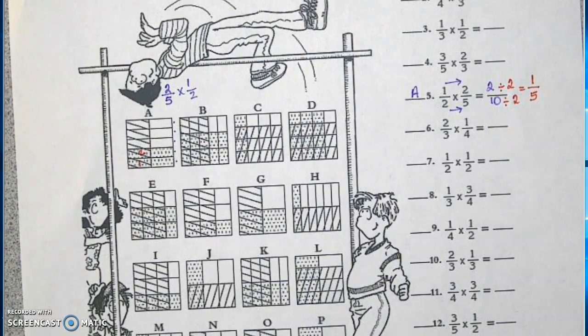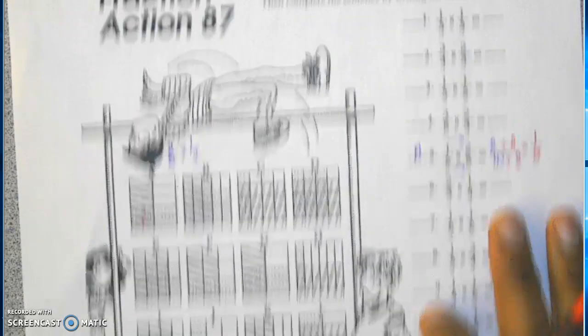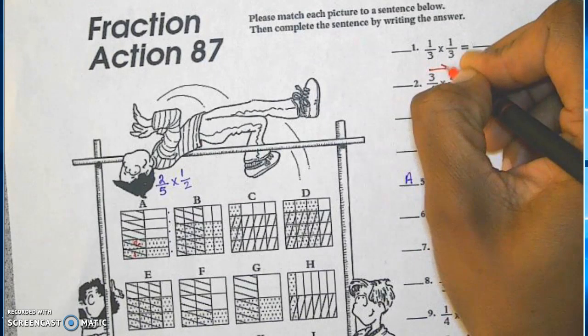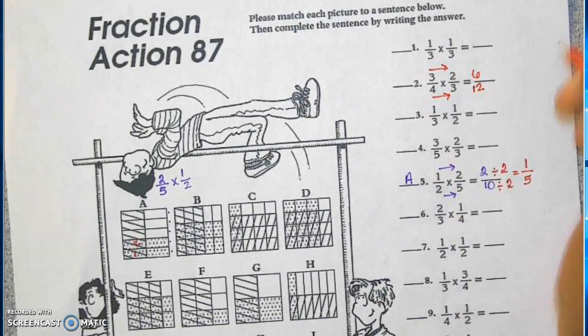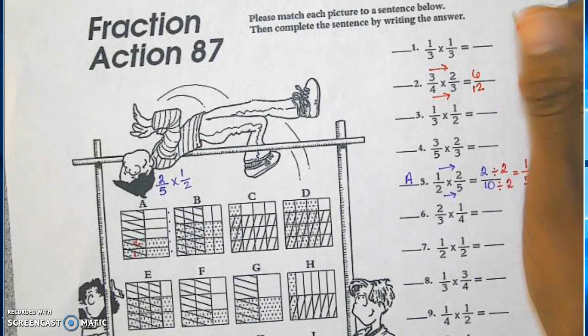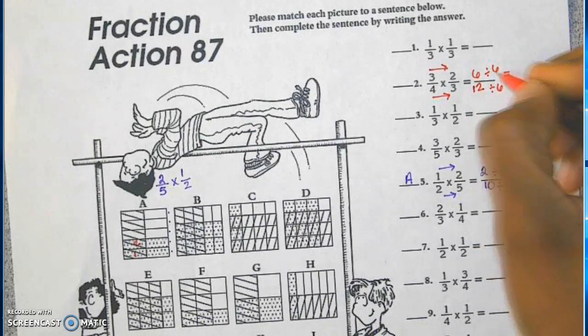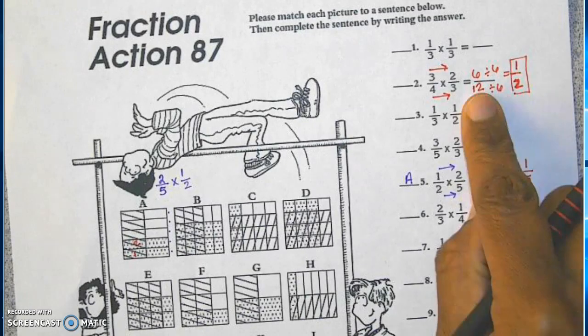Let's look at another one. How about we look at number two. Let's do some backwards work. So we're going to look at number two. Number two says three-fourths times two-thirds. Again, we're going to multiply straight across. Three times two is six, four times three is 12. Again, I see these are multiples of six. I can divide the numerator by six and the denominator by six, and I will get one-half as my simplified answer.